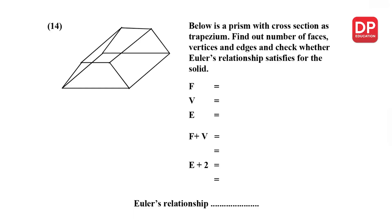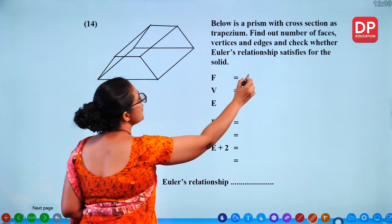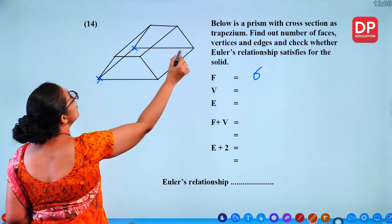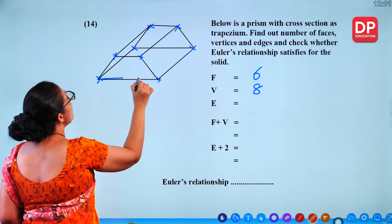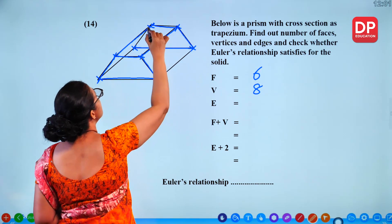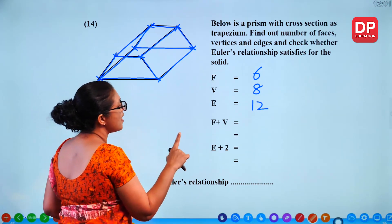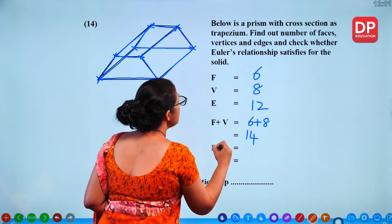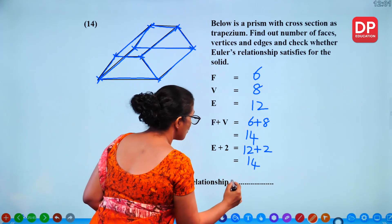Another prism with trapezoidal cross-section: 6 faces, 8 vertices, 12 edges. Faces plus vertices: 6 plus 8 equals 14. Edges plus 2: 12 plus 2 equals 14. Euler's relationship is true.